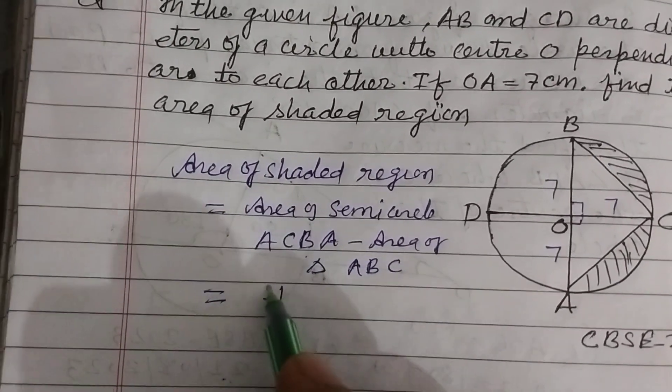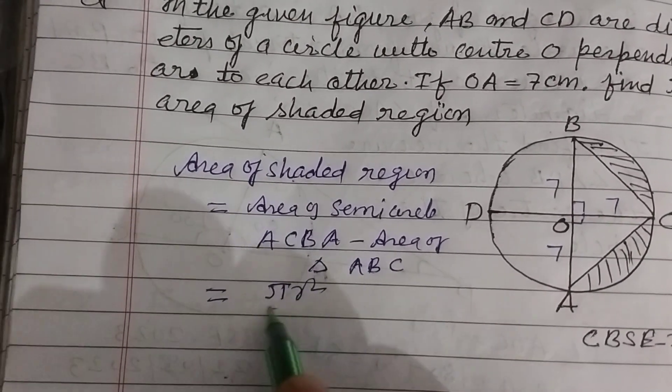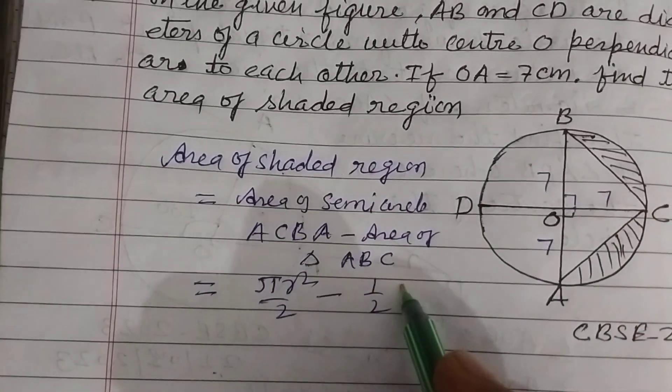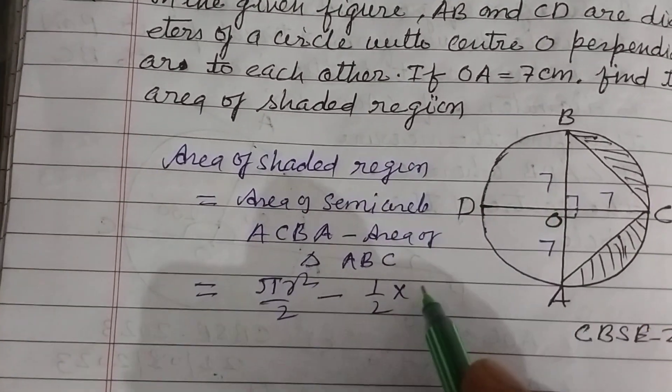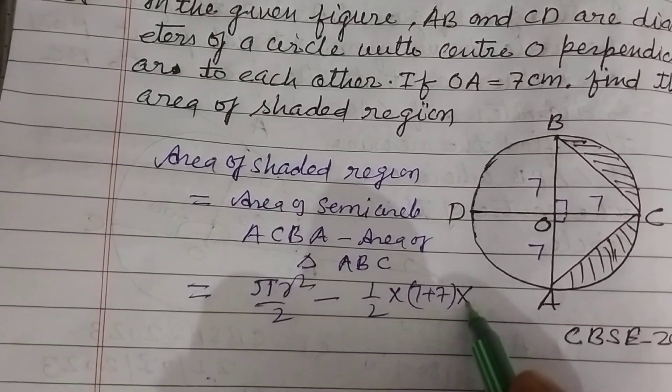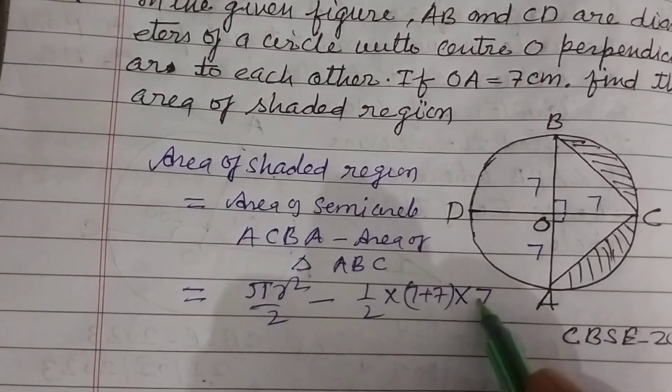So area of semicircle is πr²/2 minus half of base - base is 7 plus 7, that's 14 - into height, which is 7.